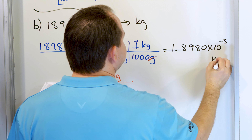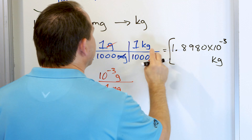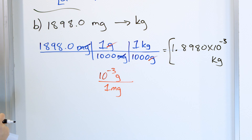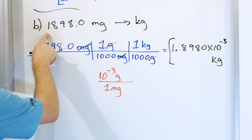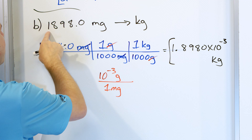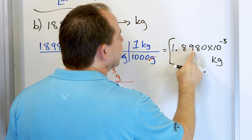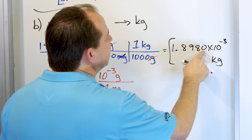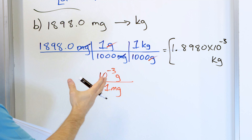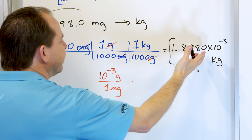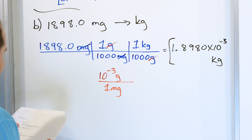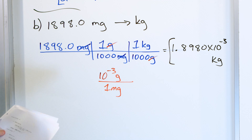And that's kilograms because that's the only unit left. Then we check our original problem — five significant figures — and our answer also has five significant figures. So I've already rounded this to the correct number of significant figures: 1.8980 times 10 to the minus three.